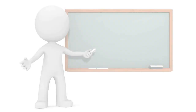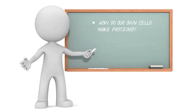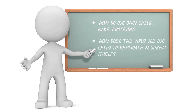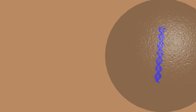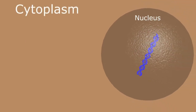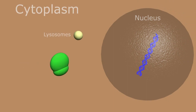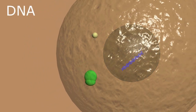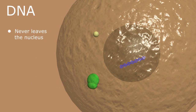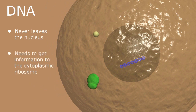First, I want to show you how our cells produce the proteins necessary to keep us alive, and then I'll explain the specifics of how the coronavirus uses these tools to replicate and spread itself. Each of our cells contains a central nucleus, which holds all our genetic material that makes us who we are. The nucleus sits in the cell cytoplasm, along with other cell organelles like lysosomes and ribosomes, all of which are contained by the outer cell membrane.